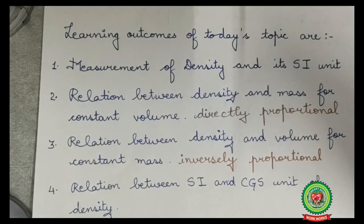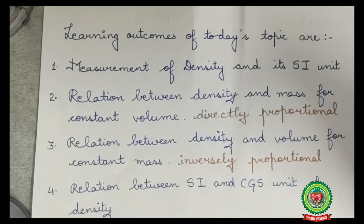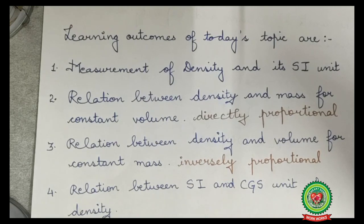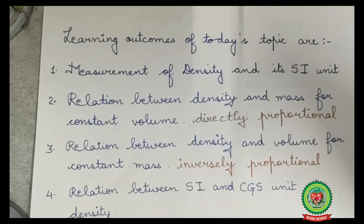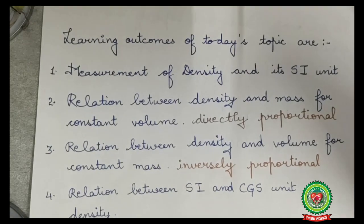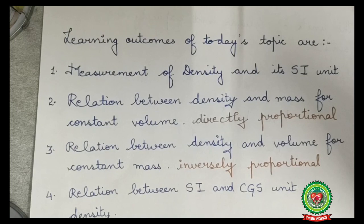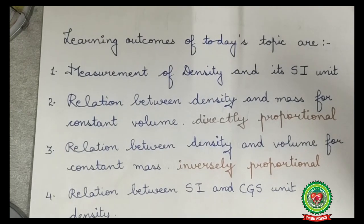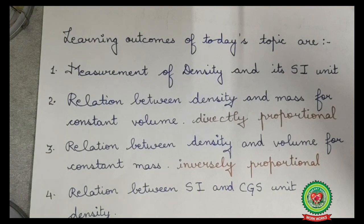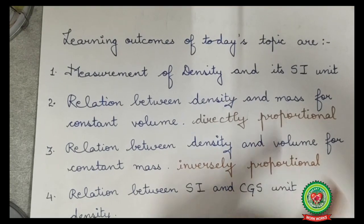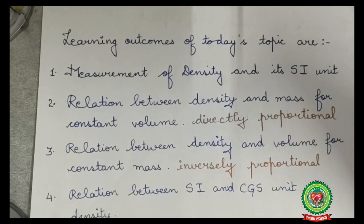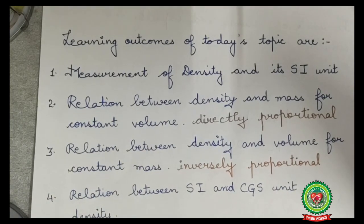Learning outcomes of today's topic: first, measurement of density and its SI unit. Second, relation between density and mass for constant volume — they are directly proportional: mass increases means density increases, mass decreases means density decreases. Third, relation between density and volume for constant mass — they are inversely proportional: volume increases means density decreases, volume decreases means density increases. Fourth, relation between SI and CGS unit of density.